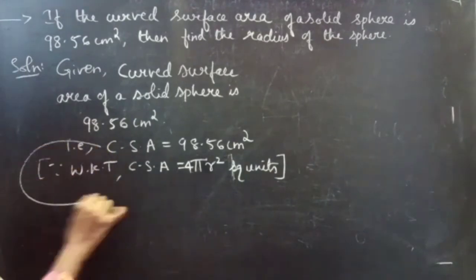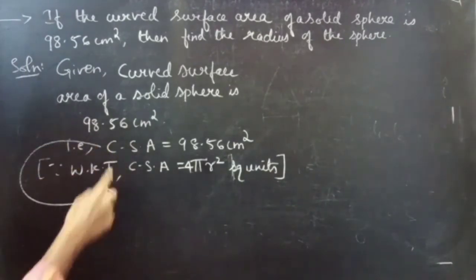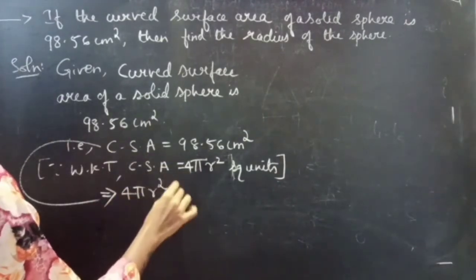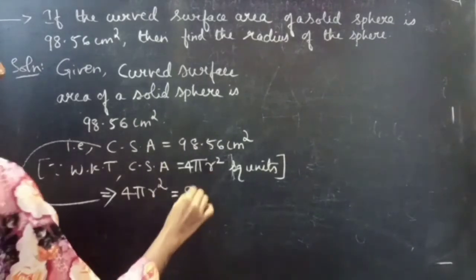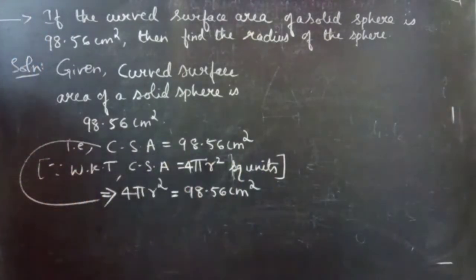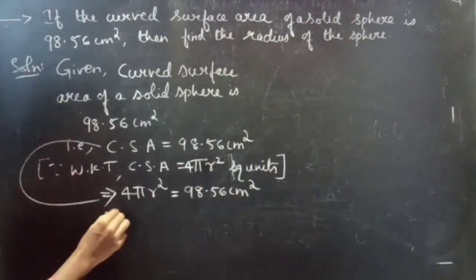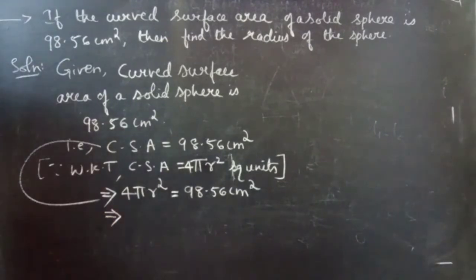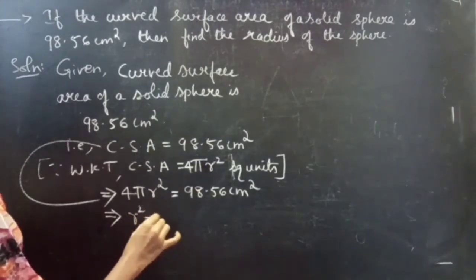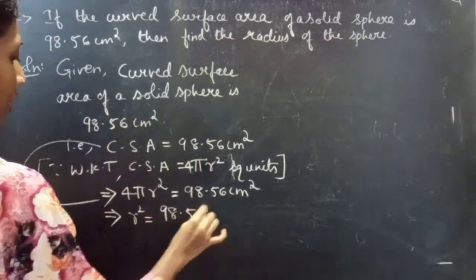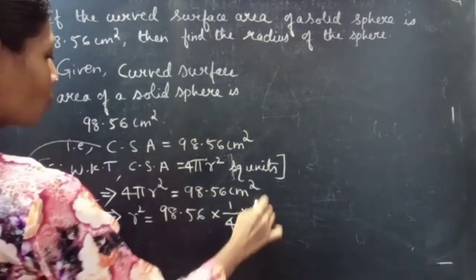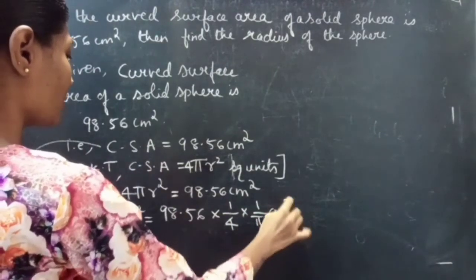So now consider this condition. We can replace 4πr² in place of CSA, which equals 98.56 cm². Using this, we are going to find the value of radius. So r² equals 98.56 × (1/4) × (1/π) cm².